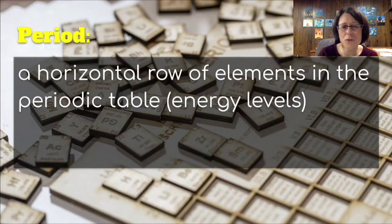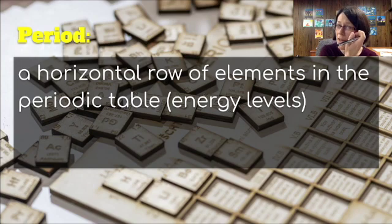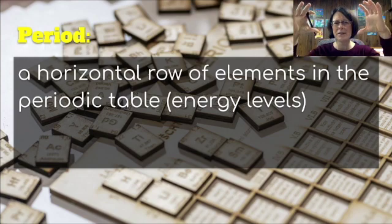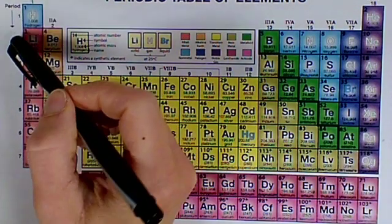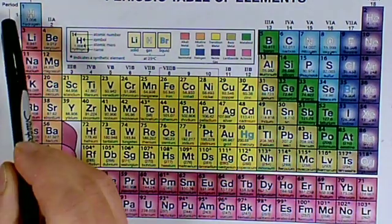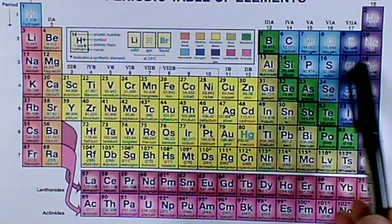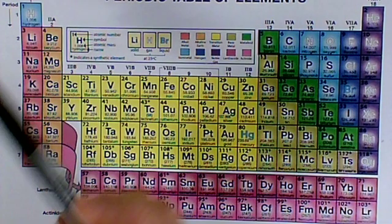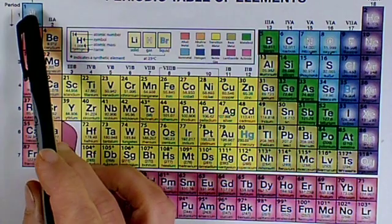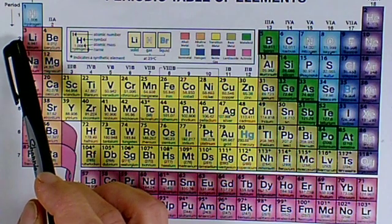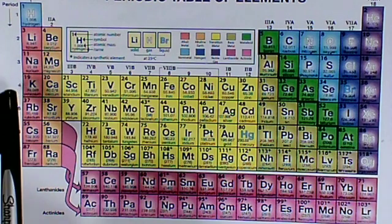There are also periods in the periodic table. These are the horizontal rows of elements, and they represent the energy levels. When we were making our atoms, remember we had those different size rings of electrons that went around? Those were different energy levels for the electrons. Period 1 goes across this way — period 1 is here, period 2, period 3, period 4, and so on. This also represents the energy levels that are available. So period 1 has one energy level, and hydrogen has one electron in the first energy level, with each successive period representing a ring farther out around the atoms.